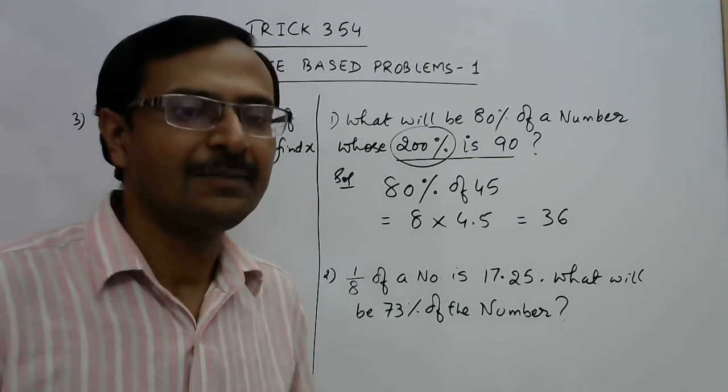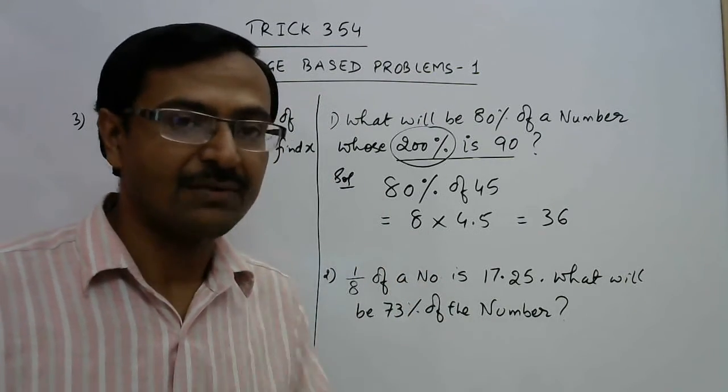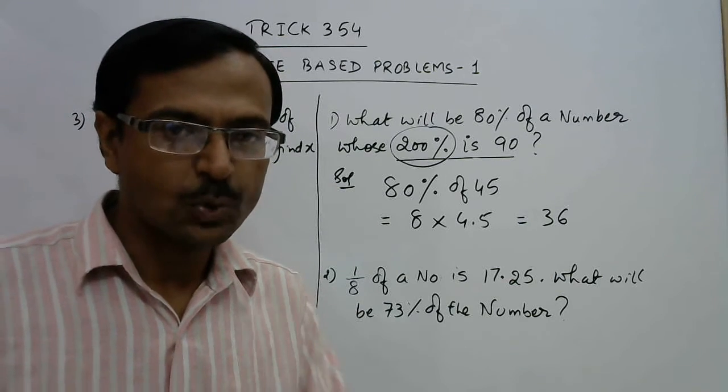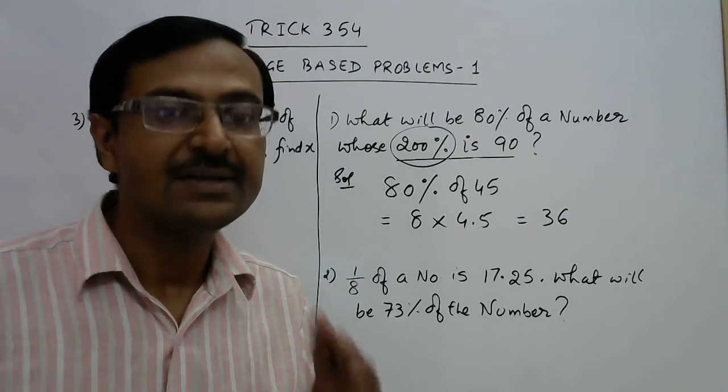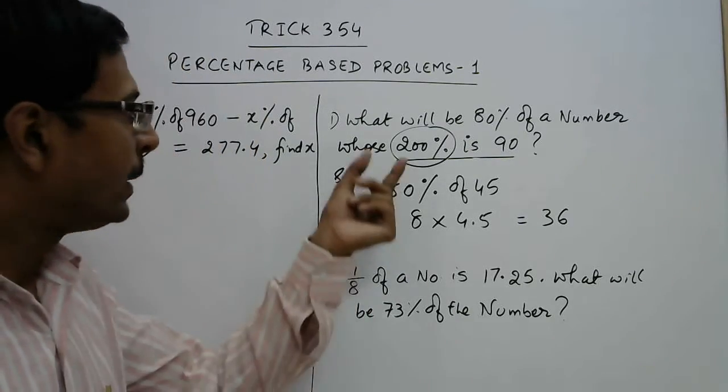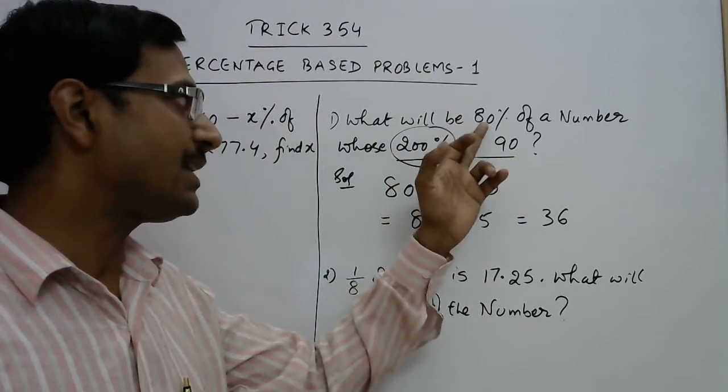Students, see, understanding of percentage and understanding of the statement is what is given. In competitive exams you don't find lengthy calculations, you find questions which need smart work. So 200% is 90 means the number is 45, and what is 80% of the number? It is 80 into 4.5, that is 36.